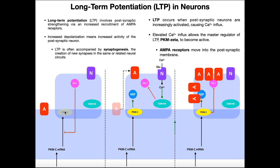Why is PKM-zeta important? PKM-zeta is important because it's going to be the master regulator of getting these AMPA receptors into the postsynaptic membrane. As long as there's no PKM-zeta, AMPA receptors are going to stay out in the periphery. Now here's a neuron we're using a lot because it's in that circuit representing a concept you really need to recall efficiently. You're using this neuron a lot, so there's a lot of glutamate binding to the NMDA receptor, and so there's a lot of calcium influx.